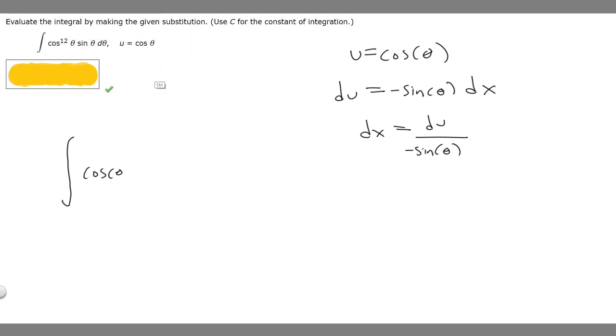So wherever our u is, we just replace it with the actual letter u. So we replace this with u to the 12 times the sine of theta.